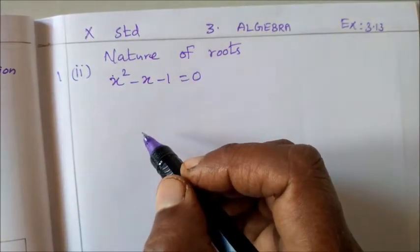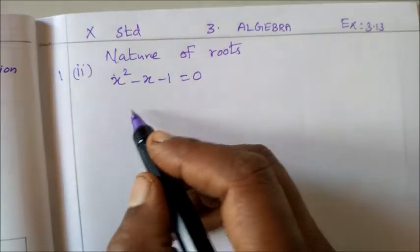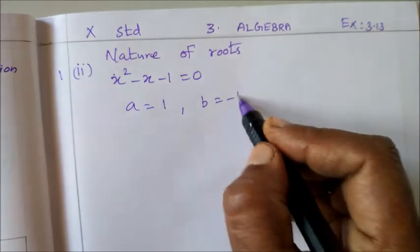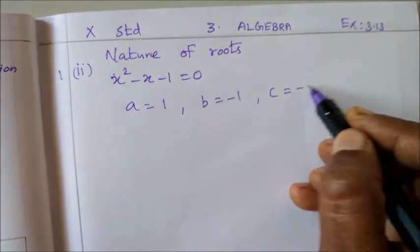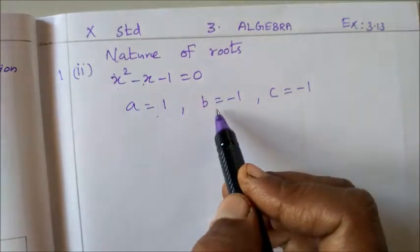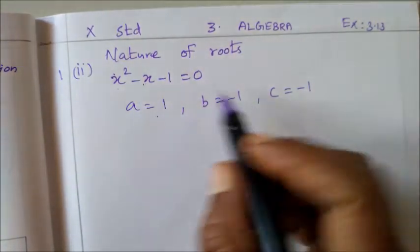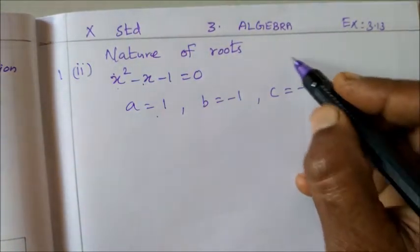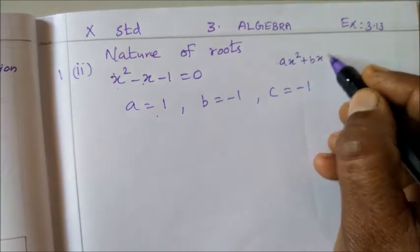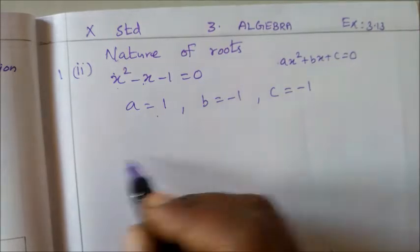Yes, delta. Delta equals b² - 4ac. So a equals what? a equals 1 and b equals -1, c equals -1. x² coefficient is a, then b is the x coefficient, then constant is c. General equation is ax² + bx + c = 0.